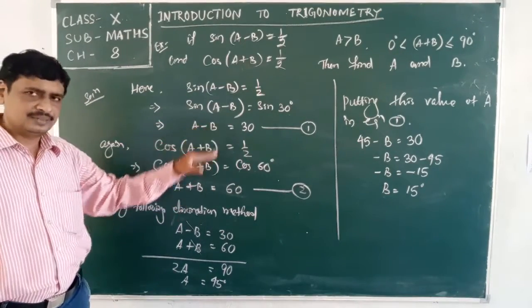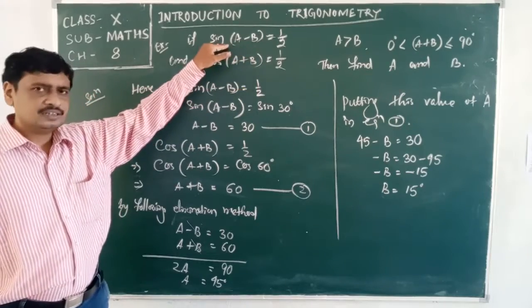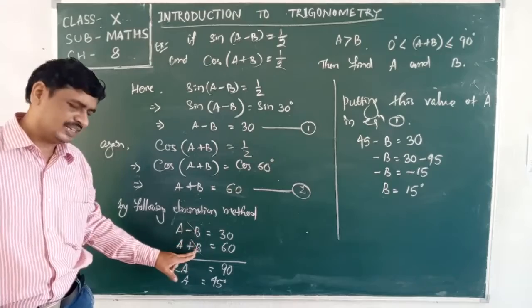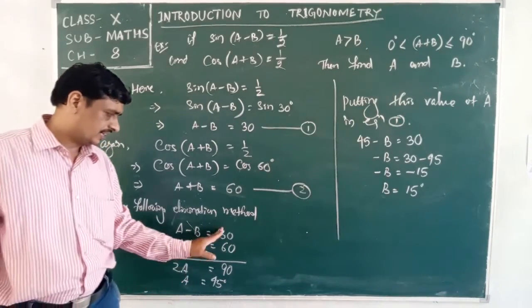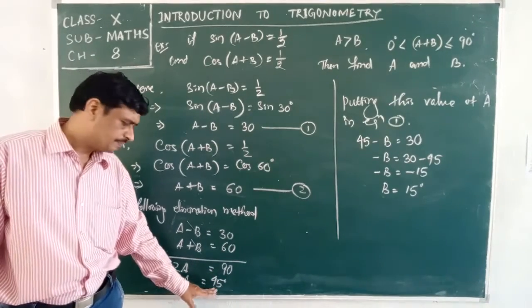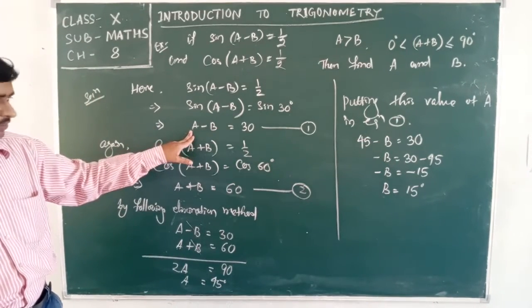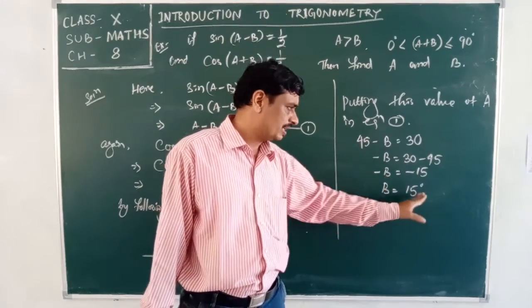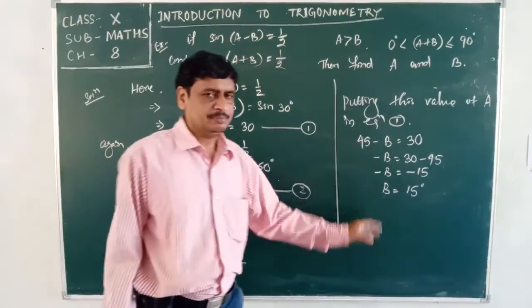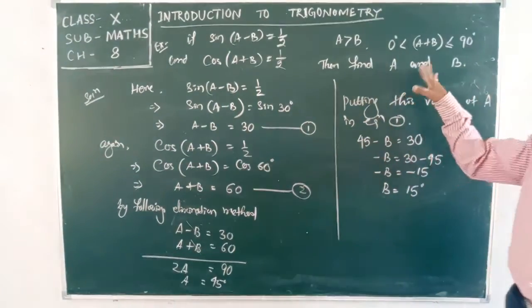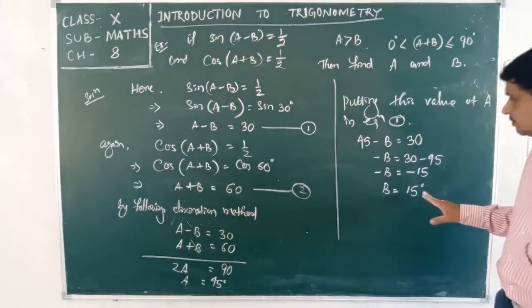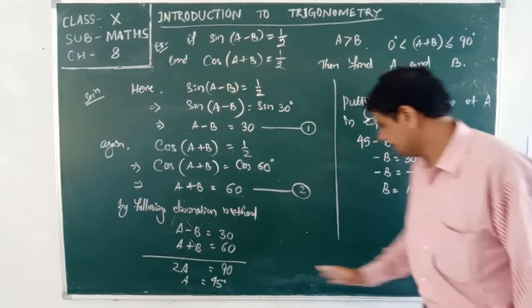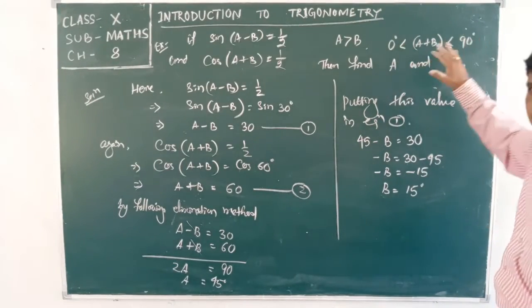We obtained two equations from the given sin and cos statements. Using the elimination method, −B and +B cancel, A + A = 2A, and 30 + 60 = 90, giving A = 45°. Substituting in equation 1 gives B = 15°. Checking conditions: A > B (45 > 15 ✓), and A + B = 60° which lies between 0° and 90° ✓. Both conditions are satisfied.